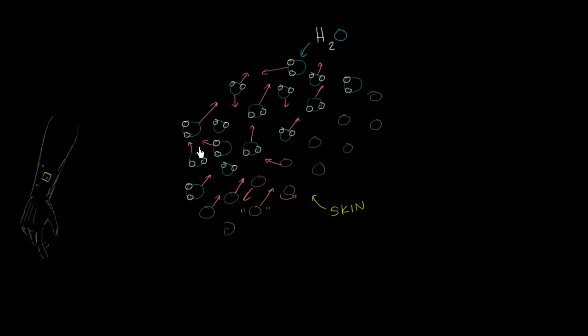That one might be going really fast in that direction. This one might be going really slow. All of these water molecules are attracted to each other. Those are called hydrogen bonds. We talk about them in more depth in the chemistry playlist. But if they have enough energy, if they're going in just the right direction, they might be able to escape. They're all attracted to each other a little bit, and that's why the water sticks together.